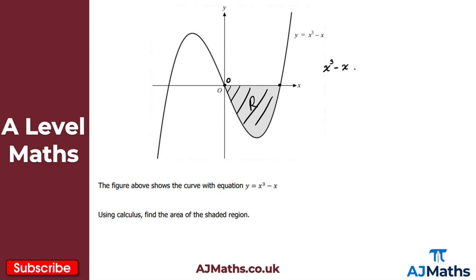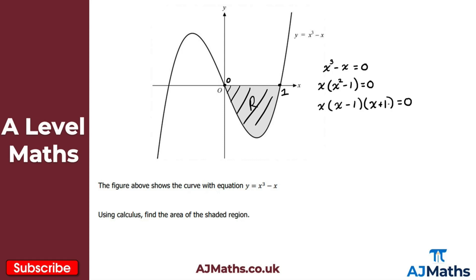Setting x cubed minus x equal to zero, I factorize by pulling out x: x(x squared minus 1) equals zero. Recognising the difference of two squares: x(x minus 1)(x plus 1) equals zero. This gives three solutions: x equals 0 (the origin), x equals positive 1 (the right intersection), and x equals minus 1 (the left intersection, which we don't need here).